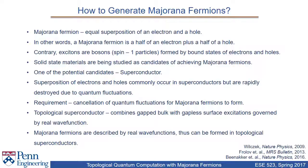Currently, solid-state materials are being studied as candidates for achieving Majorana fermions. One such candidate is the superconductor. In superconductors, superposition of electrons and holes as required by the Majorana recipe commonly occur, but are rapidly destroyed due to quantum fluctuations. Thus, for Majorana fermions to form, quantum fluctuations need to be cancelled so that superposition states of electrons and holes can persist.